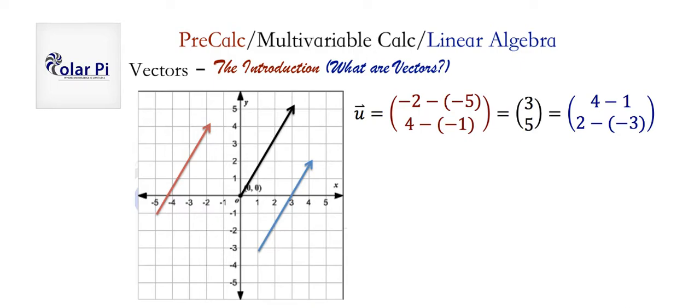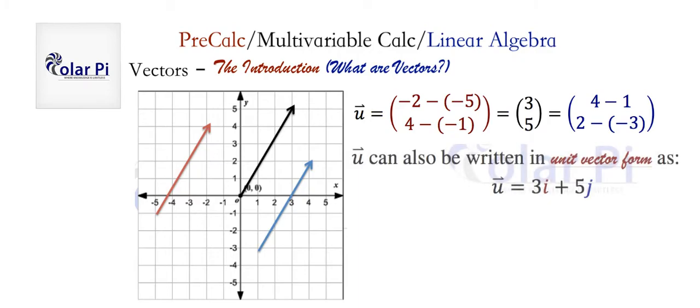There are two other representations of this vector u. One of them is called a unit vector form. If i is a unit vector in the direction of the x-axis, and unit means length 1, so if i is a vector of length 1 in the x direction, and j is a vector of length 1 in the y direction...